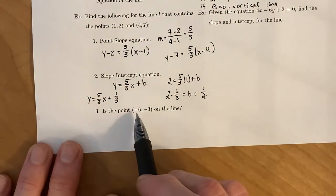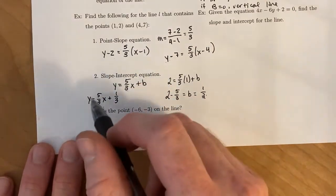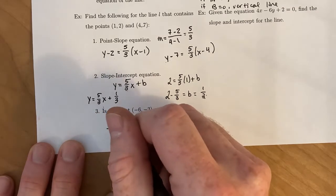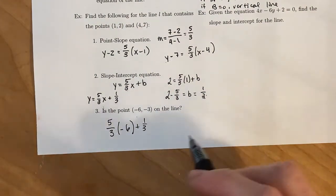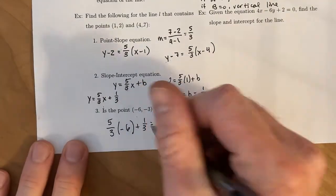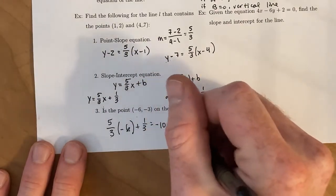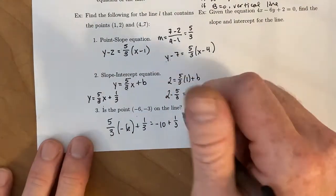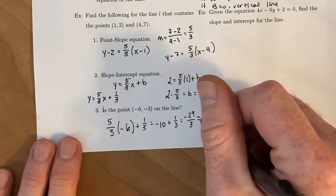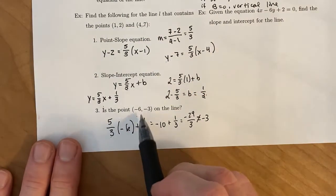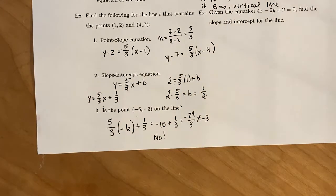Now, the next question is to determine if this point, negative 6, negative 3, is on the line. And we can use any of these equations of the line. Why don't we do the slope intercept? So, I want to take 5 thirds times negative 6 plus 1 third, and just see what we get. If we get negative 3, then negative 6, negative 3 is on the line. If we don't get negative 3, then this point is not on the line. All right, so let's see. We can do 5 times negative 6, giving us negative 30. Divide that by 3, gives us negative 10. 10 is really 30 over 3. And so, if we have negative 30 over 3 plus 1 third, we get negative 29 over 3. And that is very far off from negative 3. So, the answer, because when you plugged in negative 6 to the line, and you did not get negative 3, the answer to this would be no. That point, negative 6, negative 3, is not on the line.